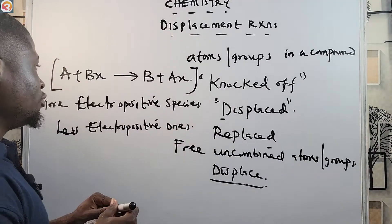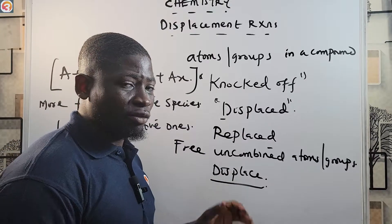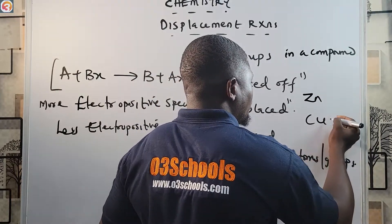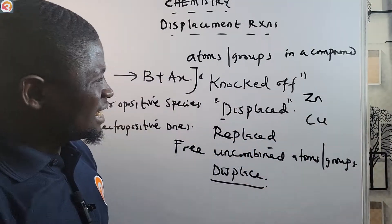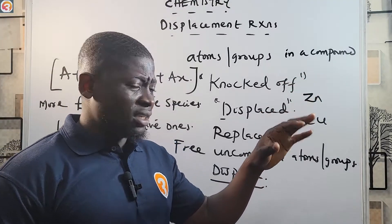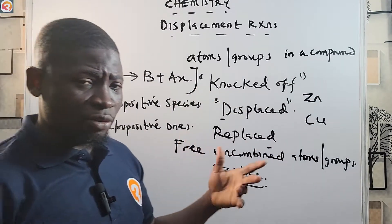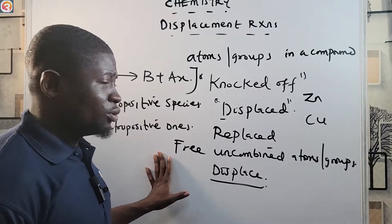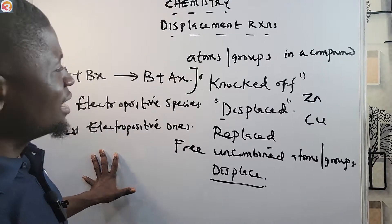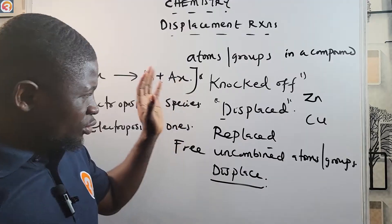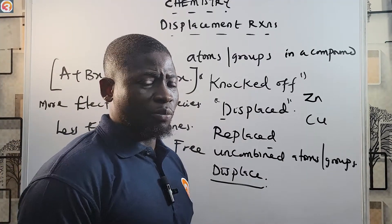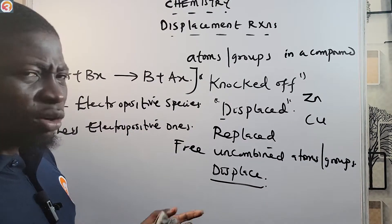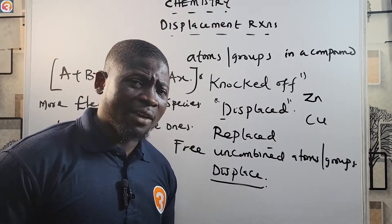For example, zinc can knock off copper from a solution because zinc is higher up in the electropositive series. Soon we will talk about electrolysis and the electropositive series and the electronegative series. For most metals, the more electropositive metal knocks off the less electropositive one — like zinc knocking off copper from solution.